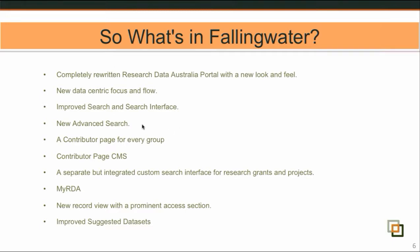We've improved the search and the search interface as part of the release and implemented a new advanced search feature. Contributor pages are now auto-generated for everybody — in the past it was an opt-in feature. Contributors can go in and edit those and add information about themselves. There's a new CMS in the portal where you can edit and publish contributor pages. We've also added a separate integrated custom search interface for grants and projects, since we're one of the only places that aggregates information about funded grants and projects. So we've put almost like a sub-portal in Research Data Australia for finding grants and projects.